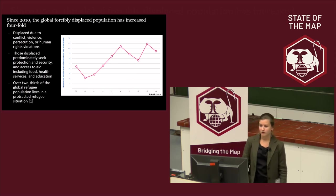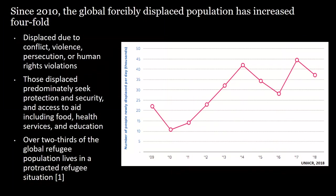Since 2010, the global forcibly displaced population has increased fourfold. Breaking it down to the number of people newly displaced per day: in 2010 that was 10 people, and in 2018 it's almost 40. This underlines the urgency in addressing new methods of how we can do SDG assessments for these populations.